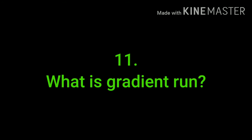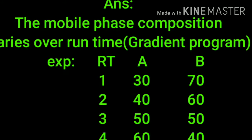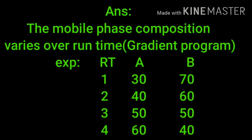What is gradient run or gradient program? Mobile phase composition varies over the run time. Here's an example: one to four minutes, component A is 30, B is 70. A is 40, 60. Then third minute 50, 50. Fourth minute 60, 40. If you see here, every minute the gradient changes.